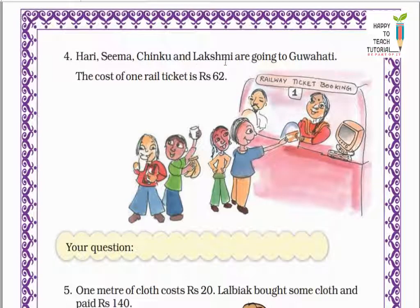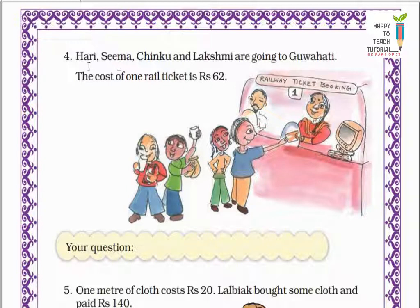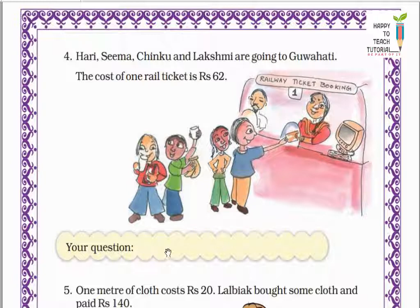Hari, Shima, Chinku and Laxmi are going to Guwahati. The cost of one rail ticket is Rs. 62. So yahaan pe Hari, Shima, Chinku aur Laxmi Guwahati ja rahe hain. Ek rail ticket ki cost 62 rupees hai. So yahan aap question bana sakte hain: what is the total cost of the rail tickets?